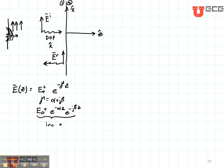It is propagating in the plus Z direction. Now we also need to write the vector part of this — the polarization. The polarization here is X directed because it's in the vertical direction. That's just telling us which way the electric field is oriented.